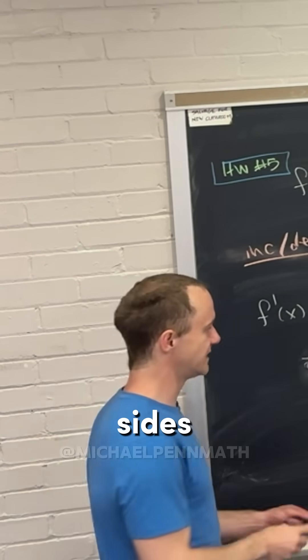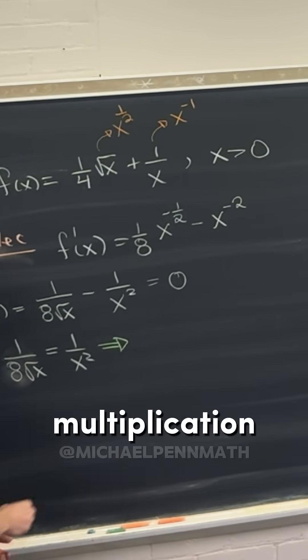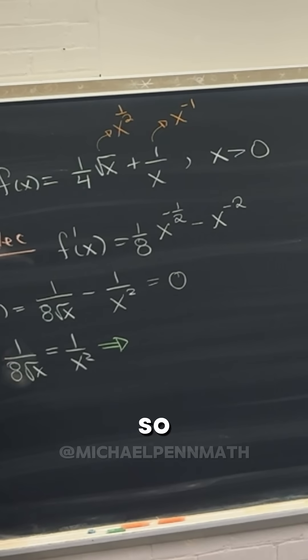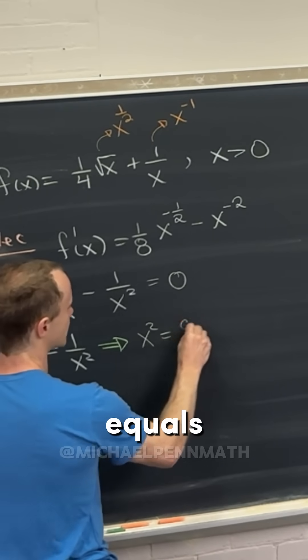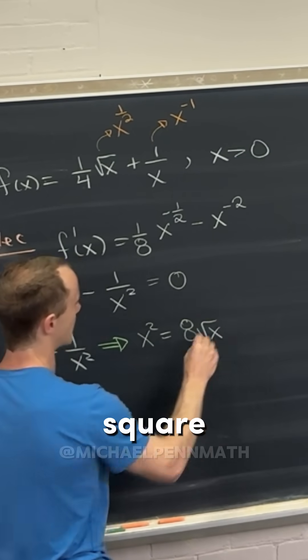And then we can take the reciprocal of both sides, or do cross multiplication, kind of the same thing, right? So we could do cross multiplication, and we'll get x squared equals 8 times the square root of x.